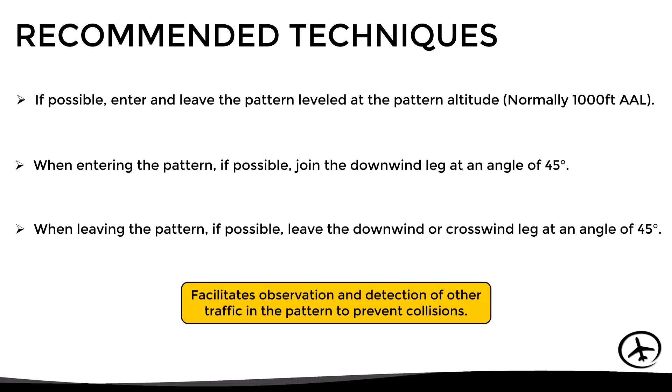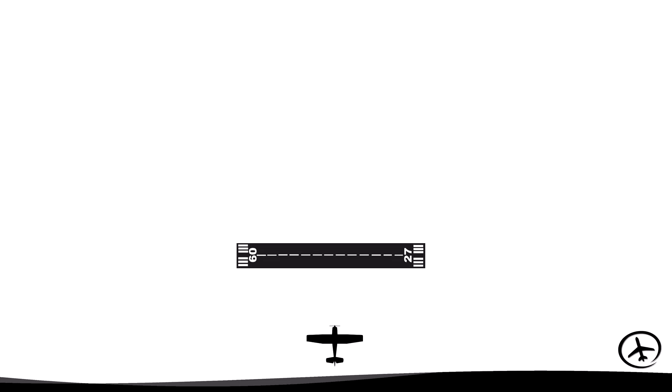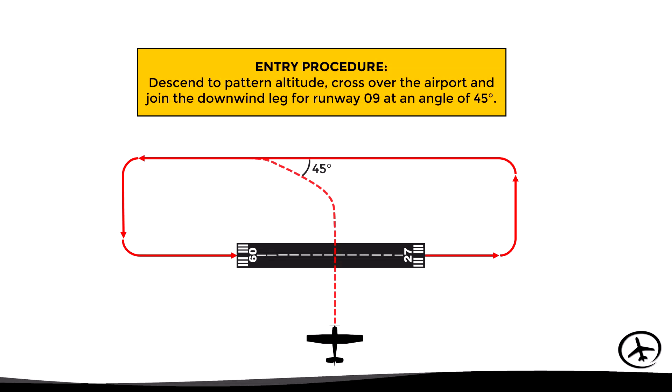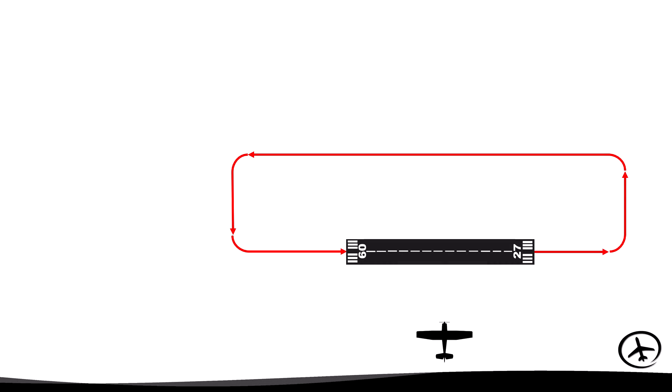However, it should be noted that it is not mandatory to follow these techniques. For example, let's say an aircraft is coming from a certain direction and wants to enter the left-hand pattern for runway 09. According to the recommended techniques, the procedure could be to descend to pattern altitude, cross over the airport, and join the downwind leg at an angle of 45 degrees.